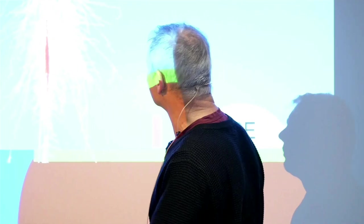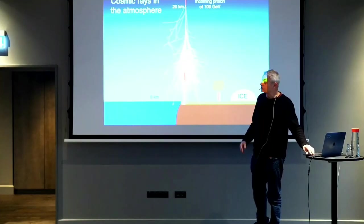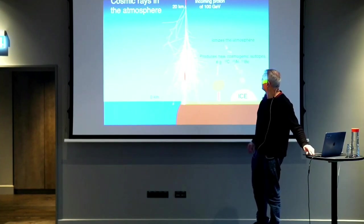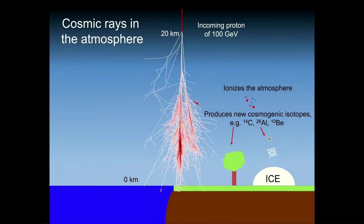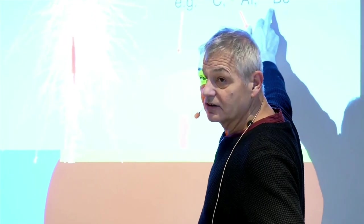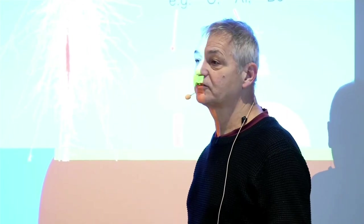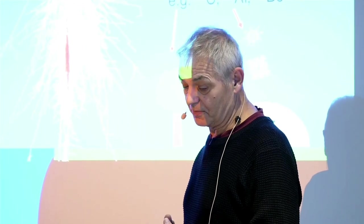If you could see these particles, you would see a constant rain of particles coming from everywhere. These particles are omnipresent. What do they do in the atmosphere? They ionize the atmosphere, meaning you have positive and negative charges. They also produce new elements — one of the elements produced is carbon-14, which you probably know is used to date biological material. This is actually produced by cosmic rays.